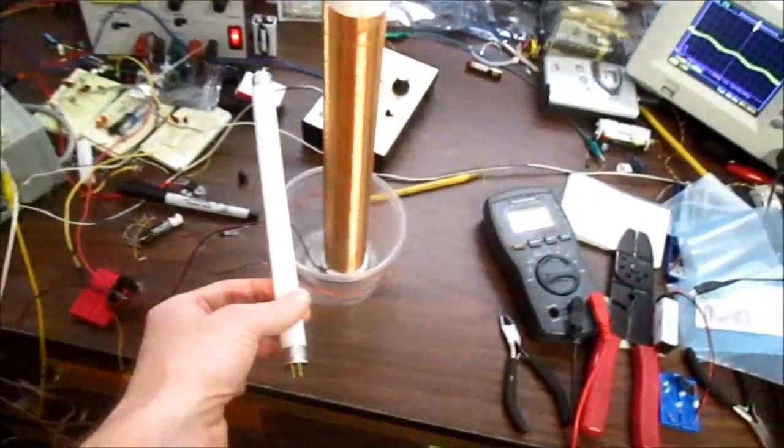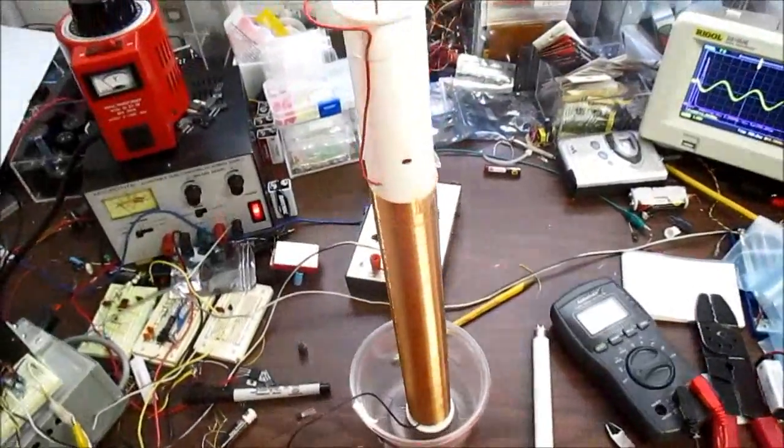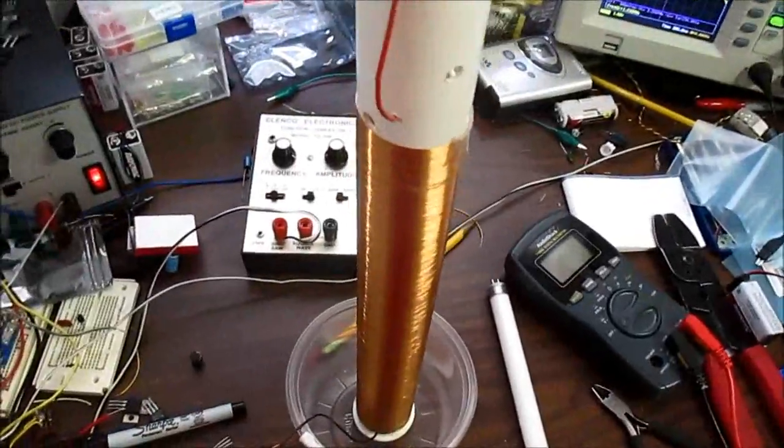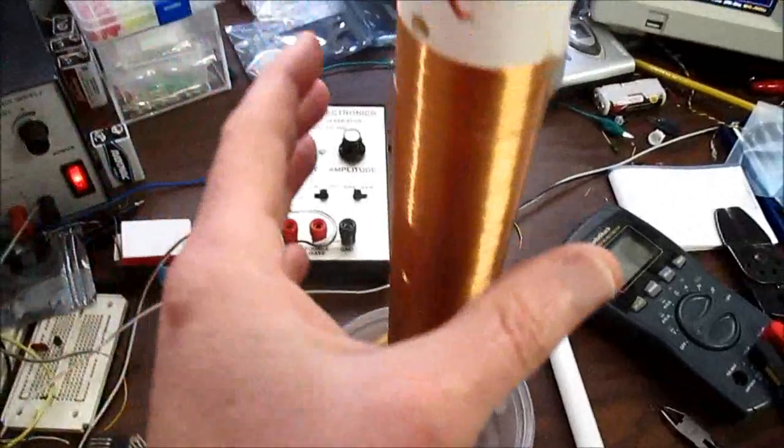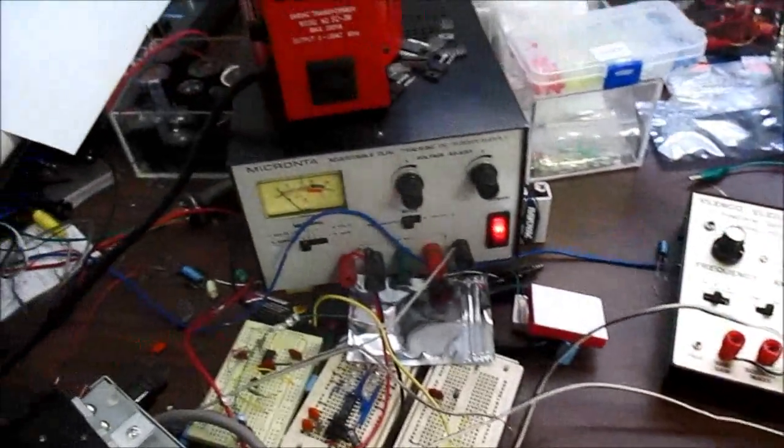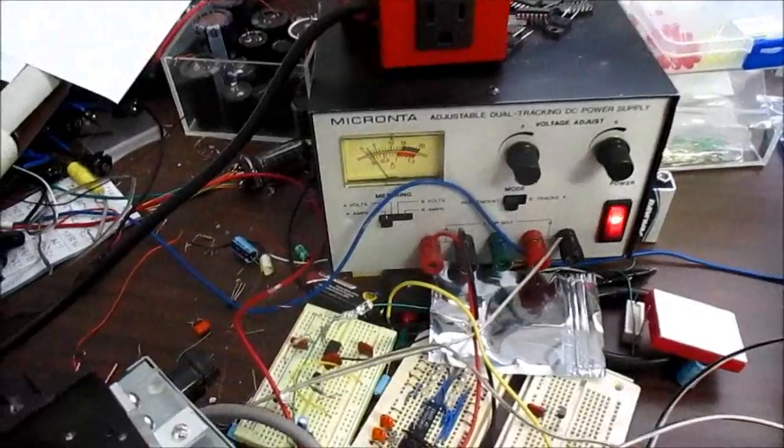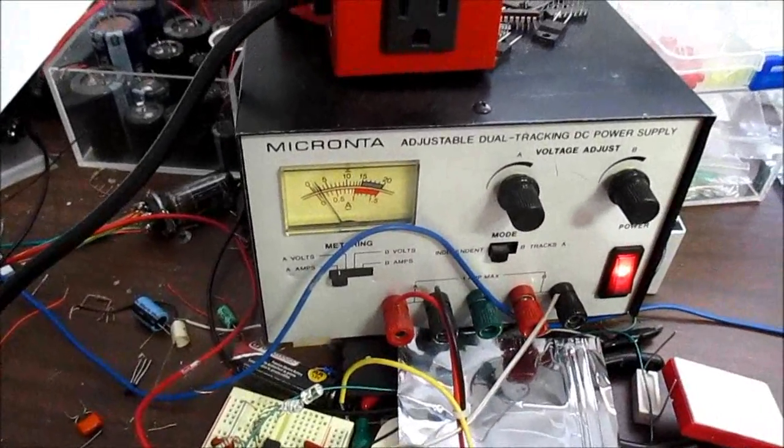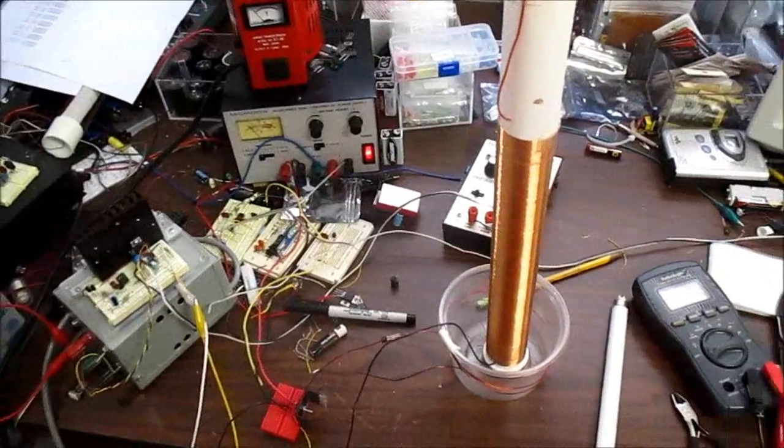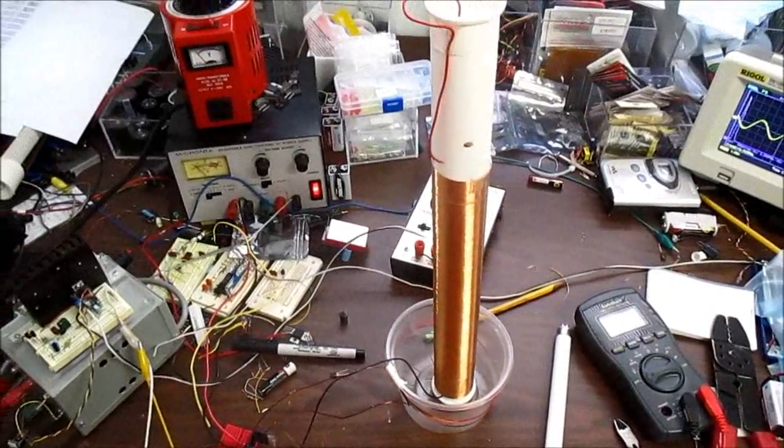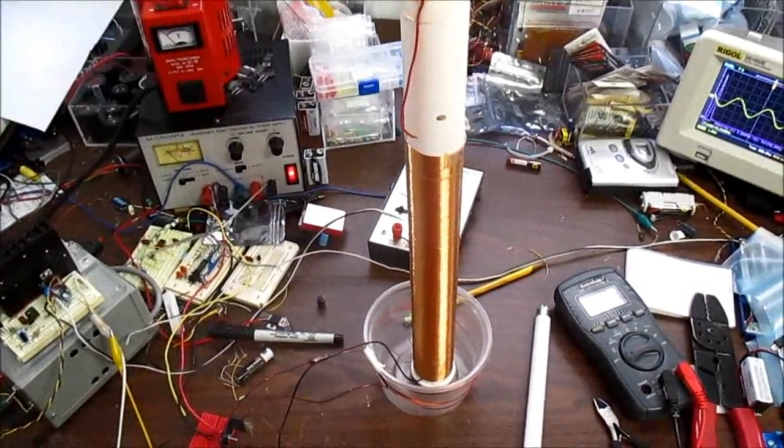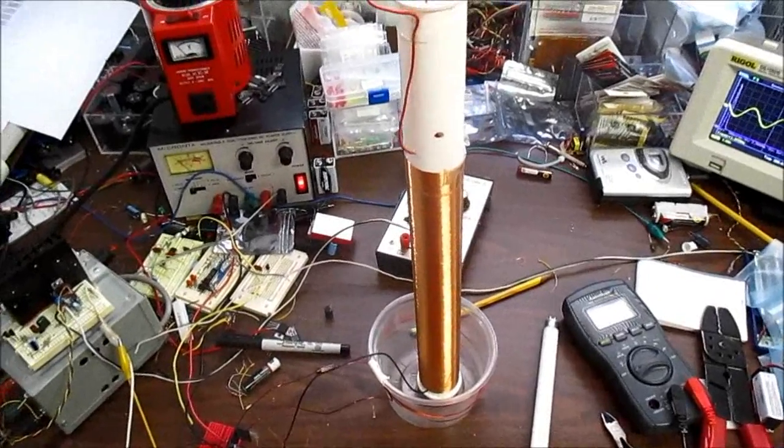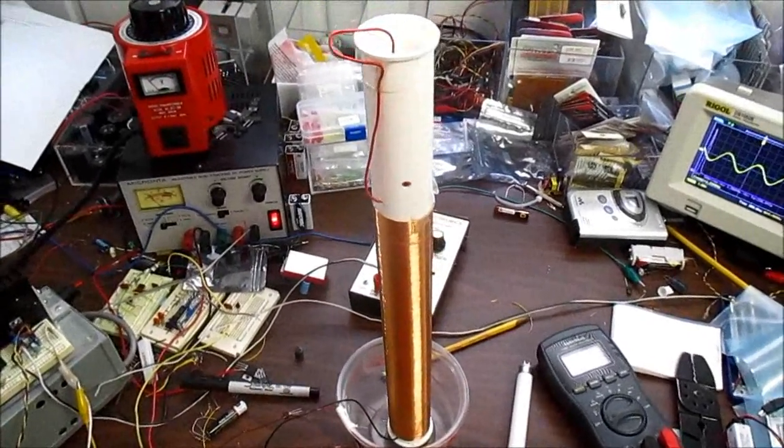Now this one does not make any arcs. I mean I can touch it and what happens is the oscillation shuts down, but that's okay because I don't want any corona or anything because I want to make an AM transmitter. If I had arcs and corona coming off the end it would generate a lot of noise.